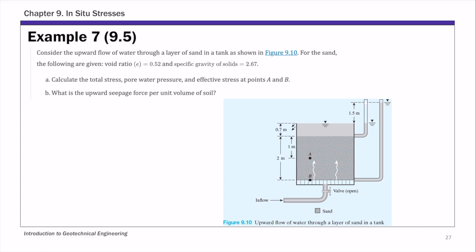This is Example 7 of Chapter 9 on effective stress. We have a soil sample inside a tank with an upward flow — water is flowing upward through a layer of sand. We are given readings: the exit pore water pressure, the inlet water pressure, and the total head loss. We will calculate total stress, pore pressure, and effective stress at two points, A and B, and also the upward seepage force per unit volume of soil.